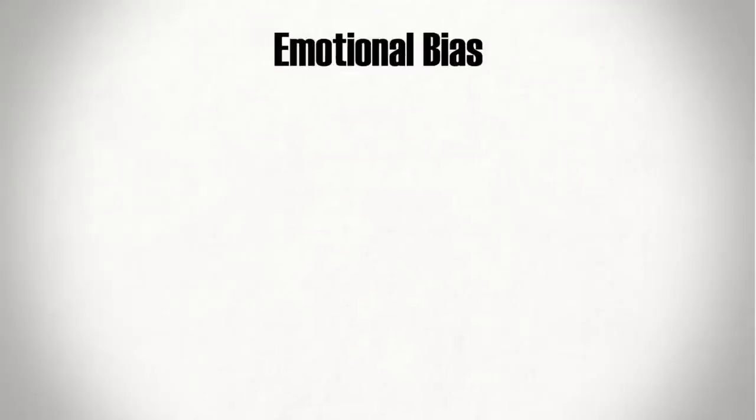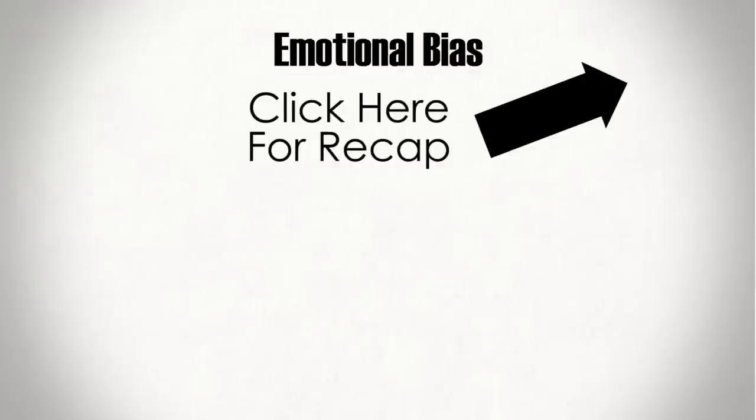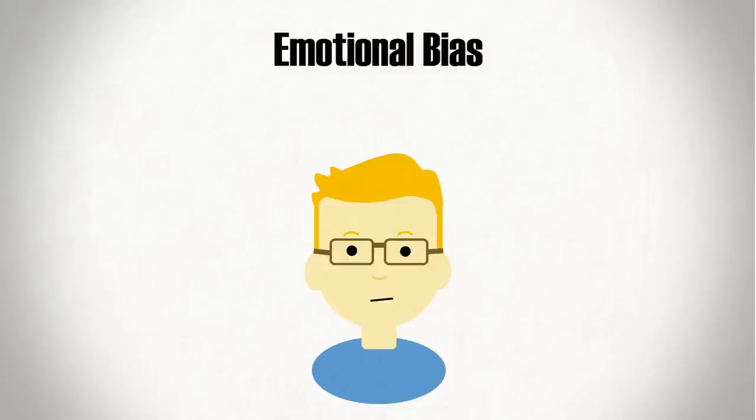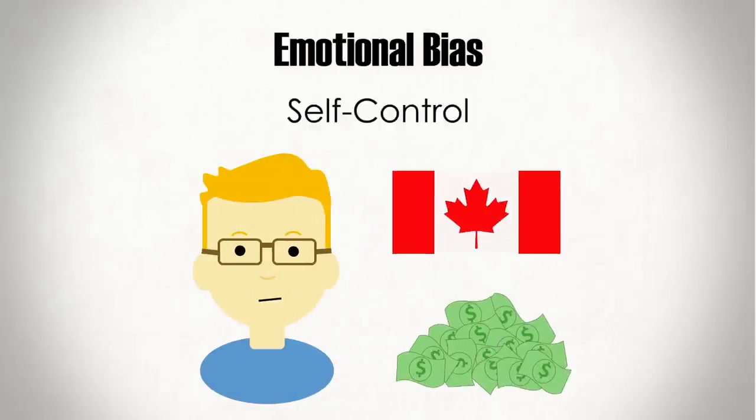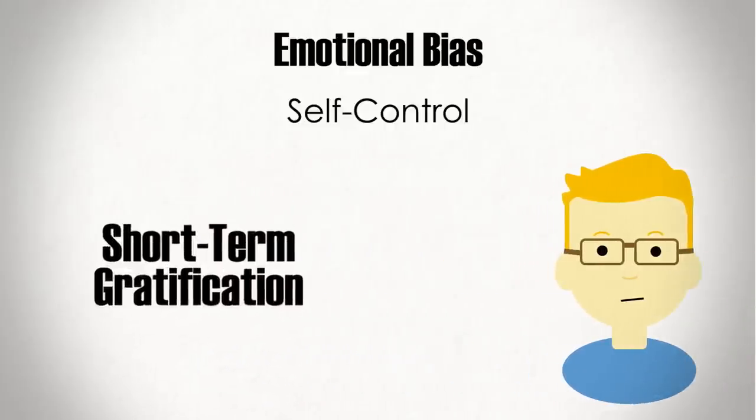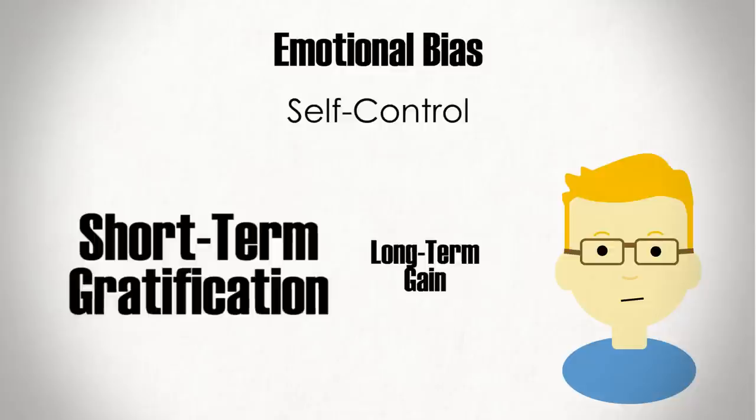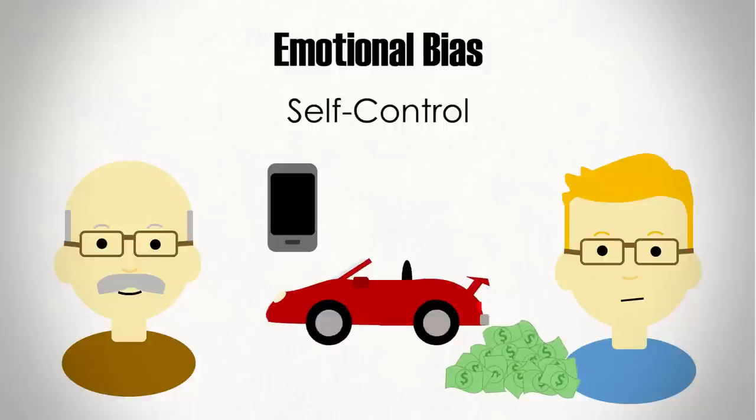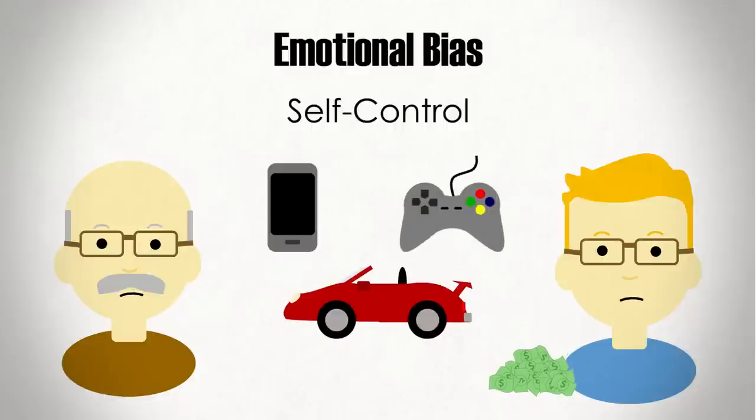A common emotional bias, which we've actually already discussed in a prior video, is loss aversion, whereby we feel stronger about losing money than we do about gaining similar amounts. Another one most of us are all too familiar with is the self-control bias. It's the classic spending problem faced by large chunks of the population. We often have difficulty trading off short-term gratification for long-term gain. Most people know they need to save more for retirement, and yet they can't help themselves when it comes to buying arguably unnecessary things.